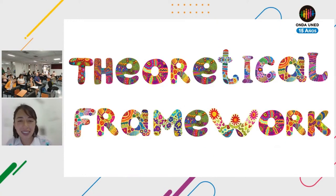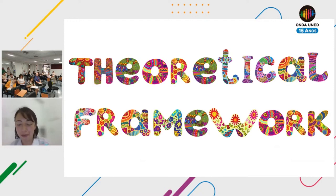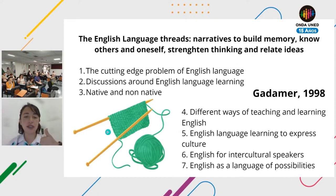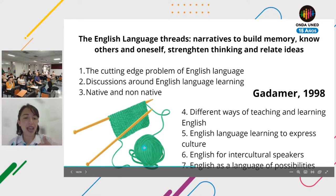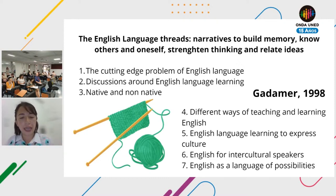Now the theoretical framework. I've already checked some research in those three fields. The theoretical framework has a really big exploration going through three fields. The first one is English language threads — focusing on how the thread represents the English language. This section is entitled: 'Narratives to build memory, know others and oneself, strengthen thinking, and relate ideas.' Here I use Gadamer's 1998 theory about inhabiting a language.